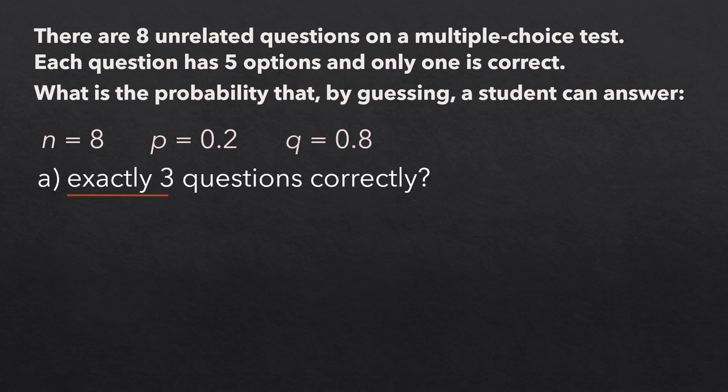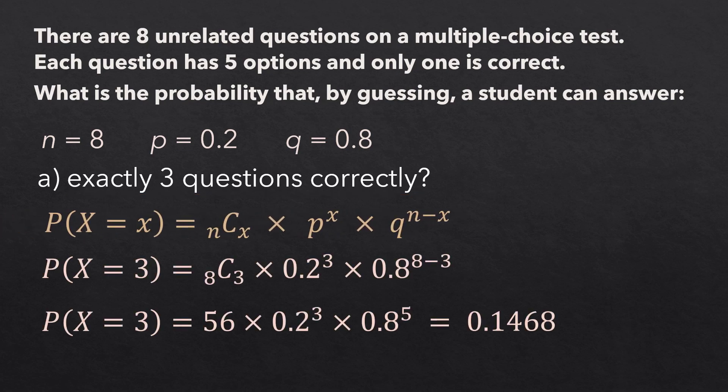For part a, answering exactly 3 questions correctly. By applying the formula, we see that the probability of exactly 3 successes is 0.1468.